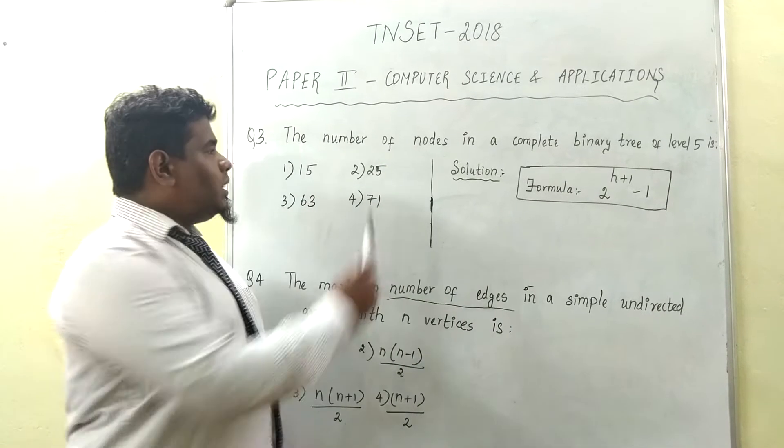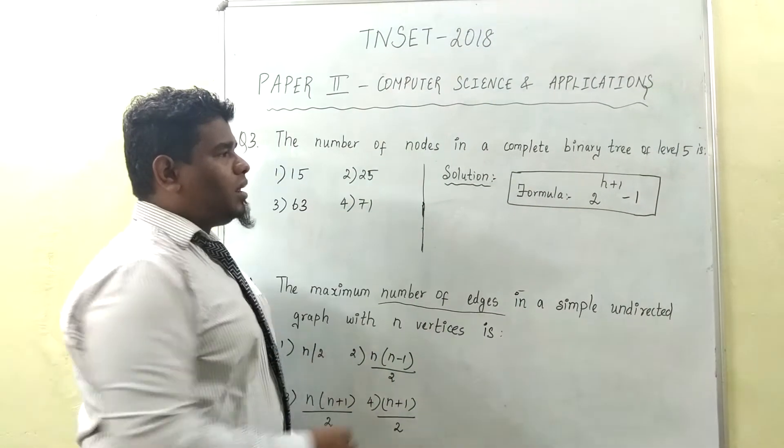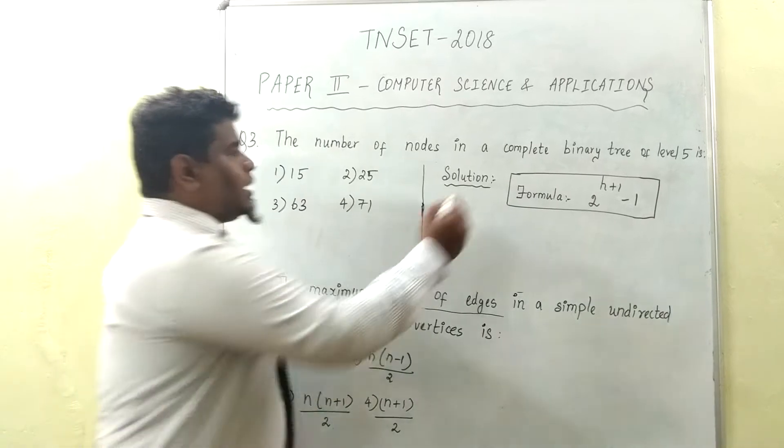Okay, question number 1. The number of nodes in a complete binary tree of level 5 is, how many are you able to come? So, complete binary tree.